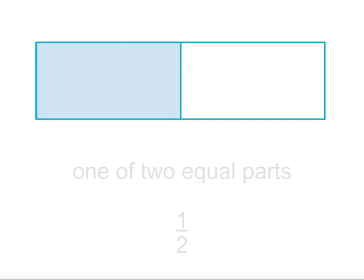For example, if we divide this bar into two equal parts, we can shade in one of them to represent one of two equal parts, or one half.